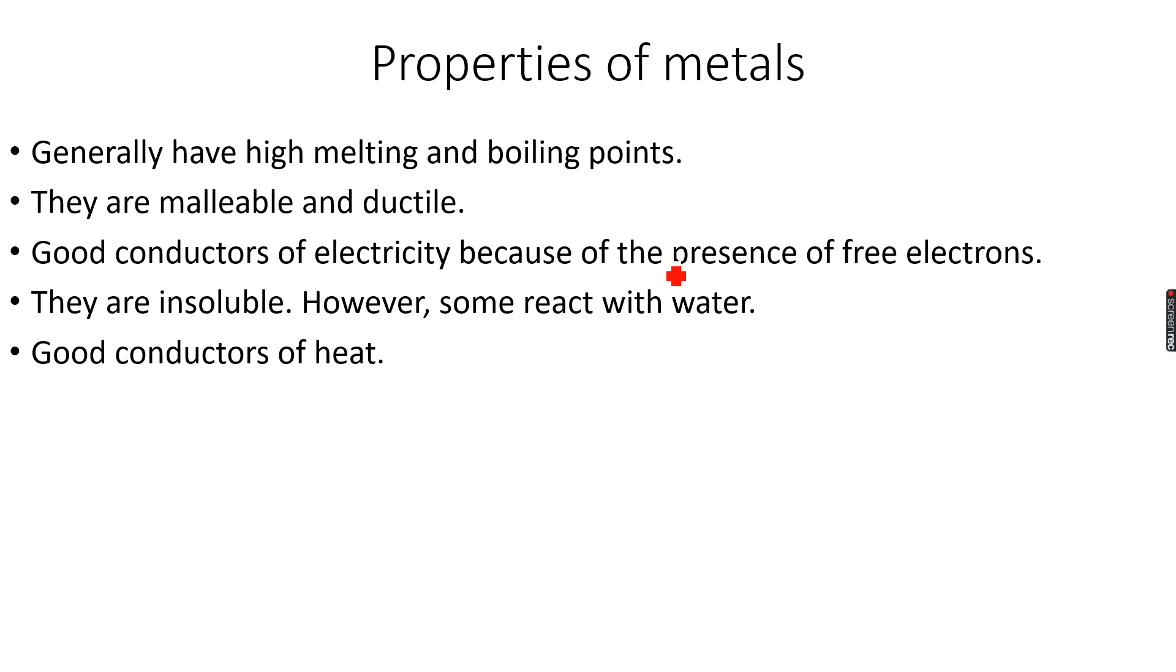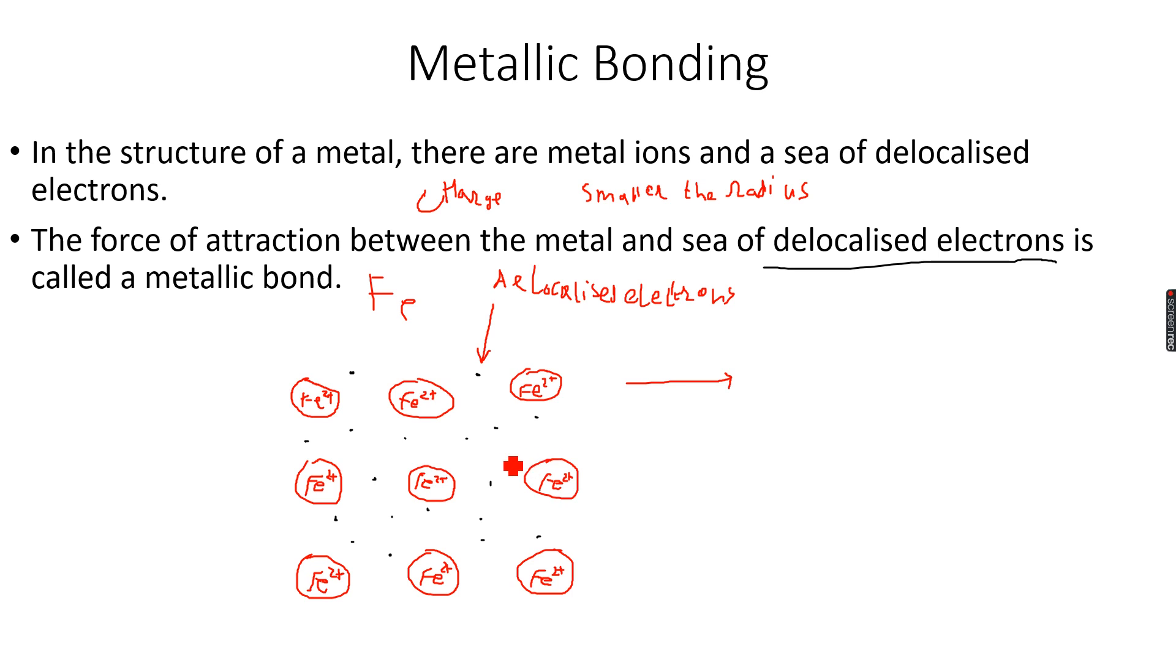Then metals are good conductors of electricity because of the presence of free electrons. So these delocalized electrons, the sea of delocalized electrons, these electrons are mobile. They can move around the structure of the metal. So when you apply a voltage, metals can conduct electricity because these electrons can move.